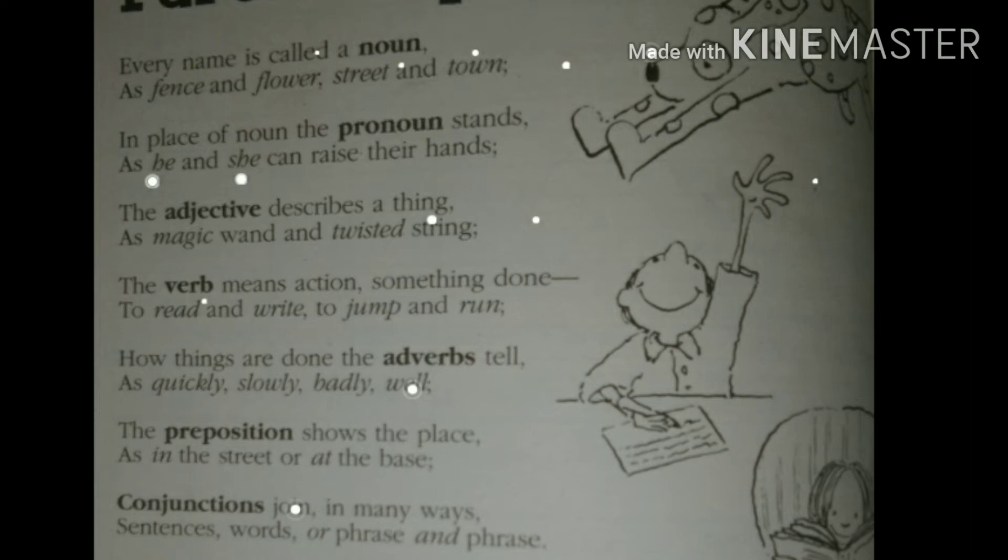Here you can see, what does the poem say? The poem says, in place of noun, the pronoun stands as he and she can raise their hands. So it is very clear that pronoun stands in the place of noun. Like here the example is he or she. Here Ram, Sita, Manoj, Meeta, names are not called. So whatever words are used in place of nouns come under the category of pronouns.